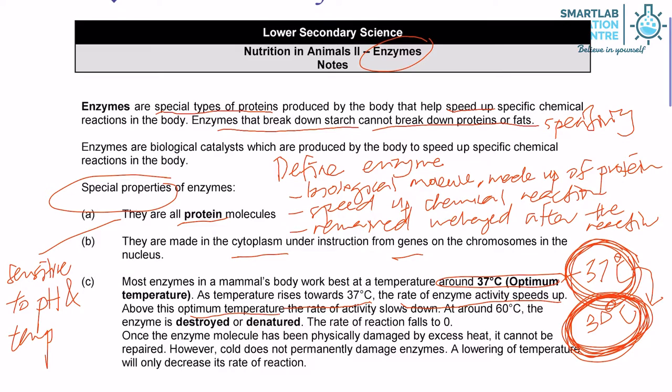Above this optimum temperature, the rate of activity slows down. At around 60 degrees Celsius, the enzyme is totally denatured and the rate of reaction is zero.